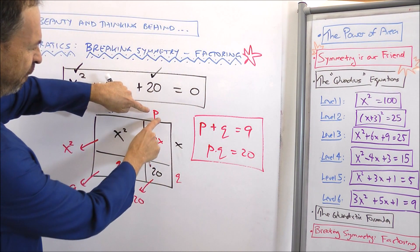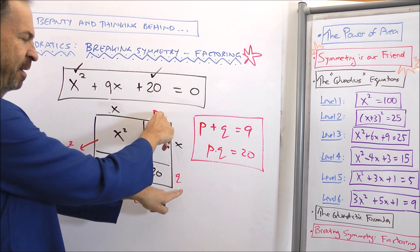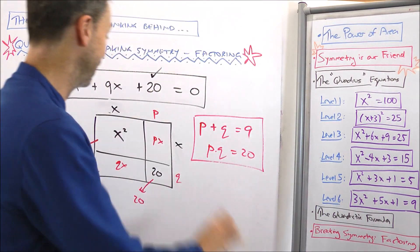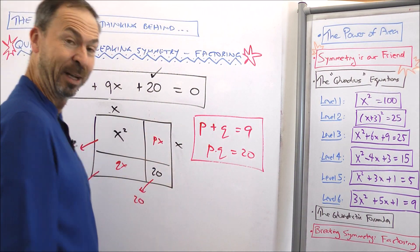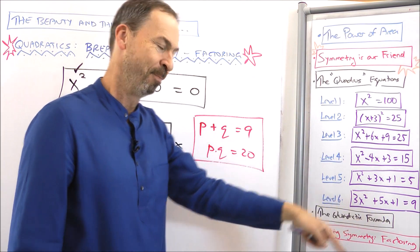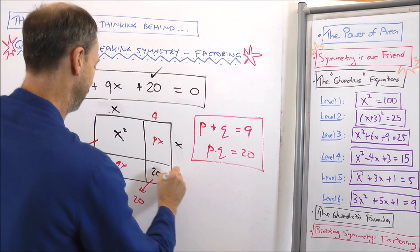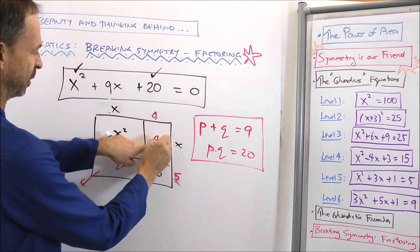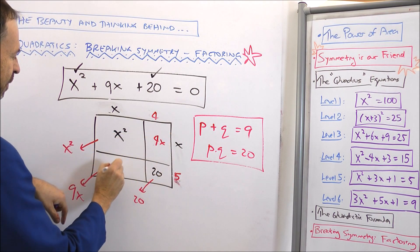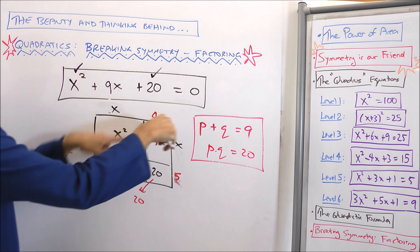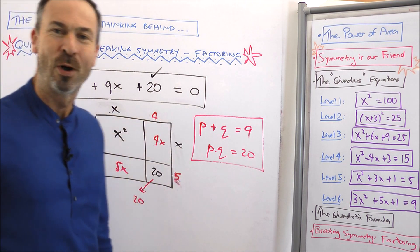Well, the trouble is, I don't know, should it be 4 and 5 or should it be 5 and 4? I don't know. Let's just try one. If it doesn't work out, we'll try the other one. Alright, so let's try 4 and 5. In which case, 4x will be here, 4 times x. 5 times x will be here. Yes, that's 9x. 4 times 5 is 20. It's working out.